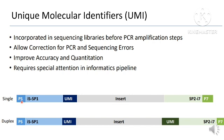In a sequencing library, you have adapters and indices used for patient identification. Apart from that, you use a UMI — a unique molecular identifier — for each molecule. You can use either a single or duplex UMI; with duplex UMI, you attach a UMI tag on both ends of the molecule.